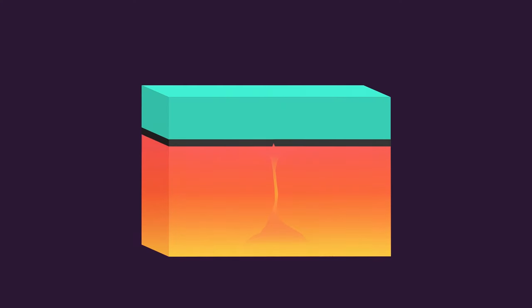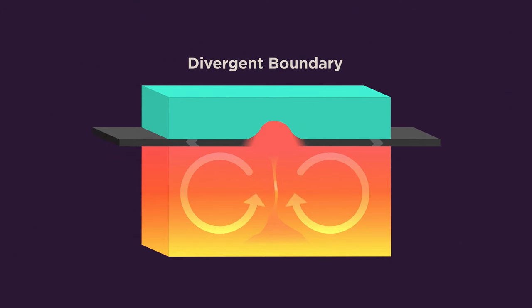At the boundary of two plates where the convection current is moving upwards, the plates move apart and new magma, which is molten rock, erupts to fill the gap, forming new oceanic crust made of basalt, an igneous rock. This is called a divergent boundary.